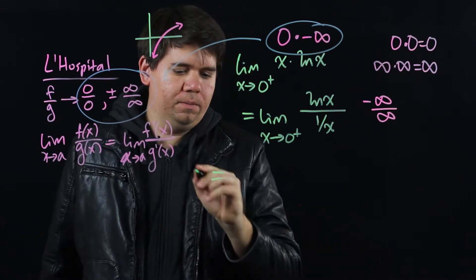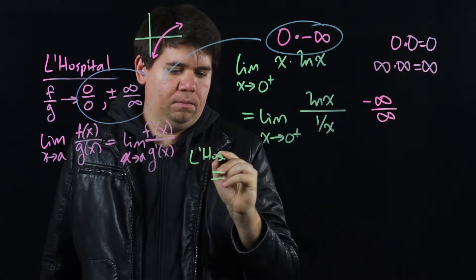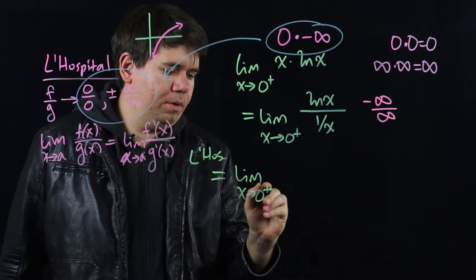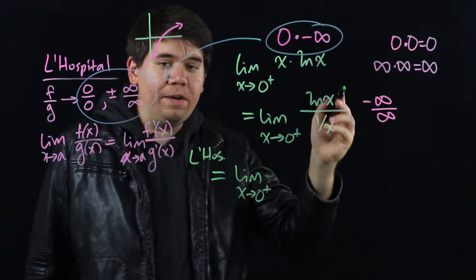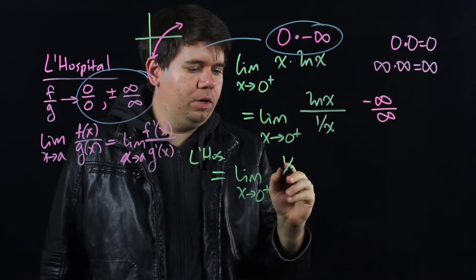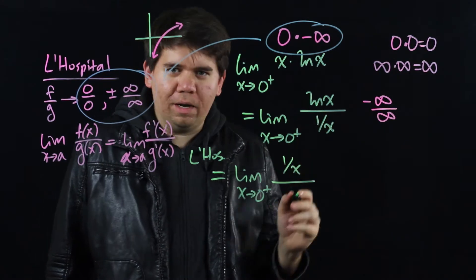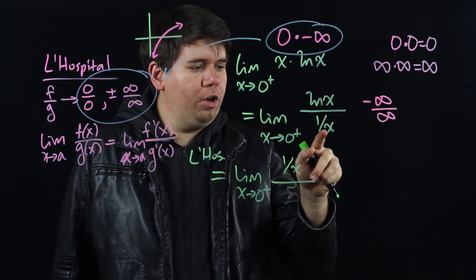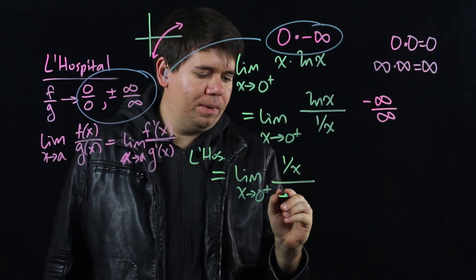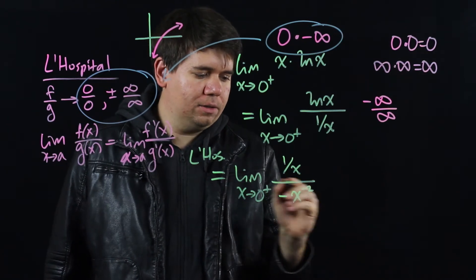Applying L'Hopital's rule, we get the limit as x goes to 0 from the right-hand side of the derivative of the top. The derivative of natural log is 1 over x all over the derivative of the bottom. 1 over x is x to the minus 1, so its derivative will be negative x to the minus 2.